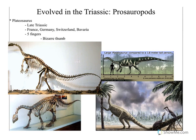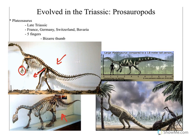The first prosauropod is Plateosaurus, from the late Triassic of Europe. It has five fingers, which is definitely an ancestral condition. You can see the forward-facing pubis, which gives you a good idea of what you're looking for to identify Saurischian dinosaurs. This dinosaur really doesn't look right as purely quadrupedal or purely bipedal — it's definitely using both. It's probably walking around bipedal but can easily go down to all fours to eat. It's a fairly sizable dinosaur.